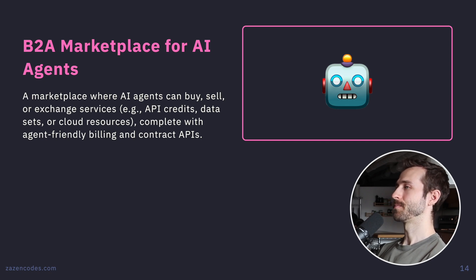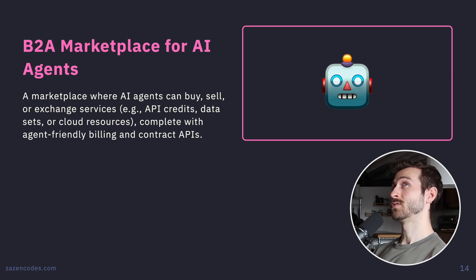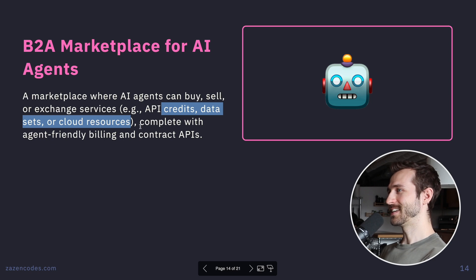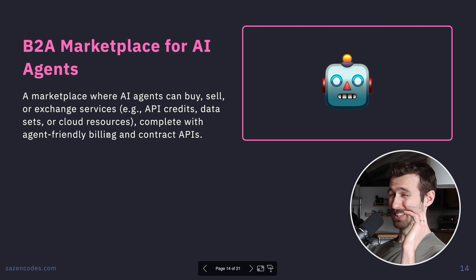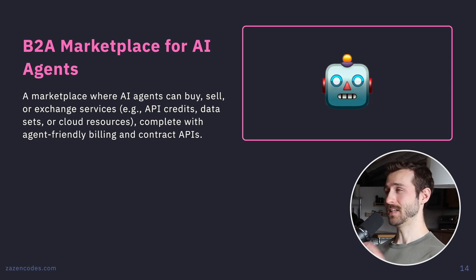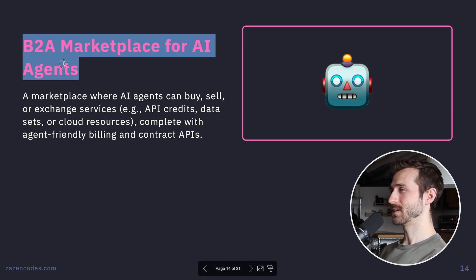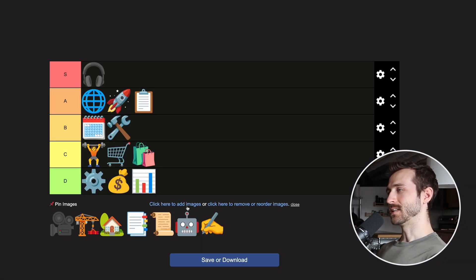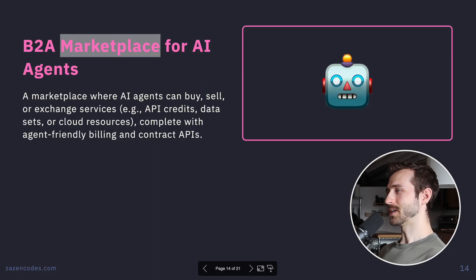Business-to-Agency marketplace for AI agents — a marketplace where AI agents can buy, sell, and exchange services, complete with agent-friendly billing and contract APIs. This feels like a 2026 or 2027 idea to me. I'm not sure how this snuck into 2025. There's something here but it's too fresh. I'm going C tier.